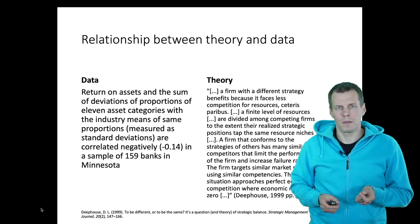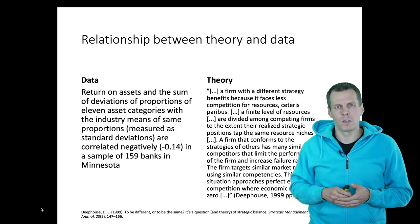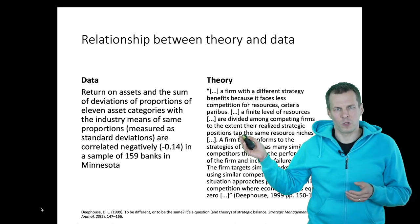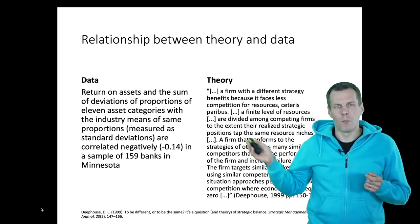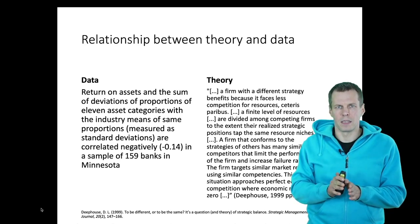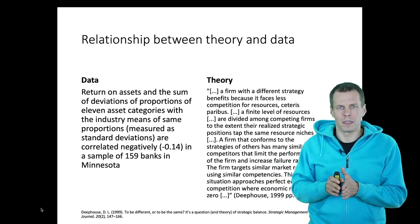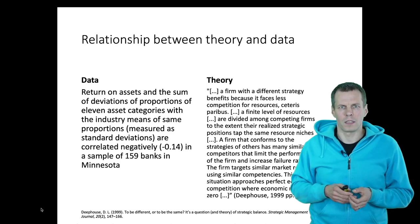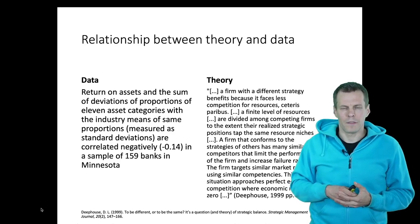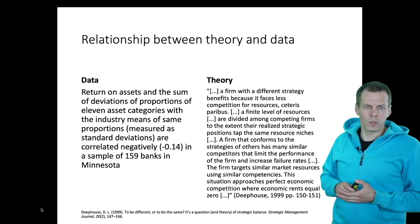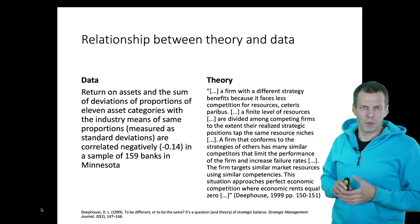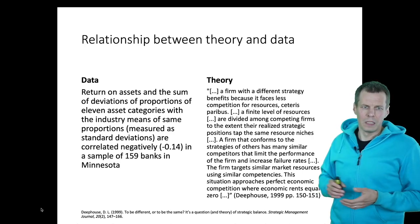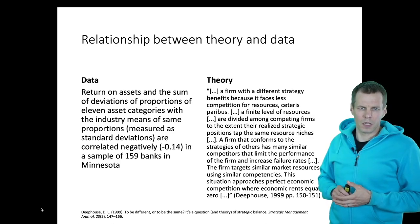Deephausen has data from banks. The data have two relevant variables: one is return on assets, a very common performance measure; another is what they call strategic deviation, which is calculated by comparing the bank's asset profile against the asset profile of a typical bank in the industry. They have 159 banks and found that the variables are negatively correlated — when one goes up, the other goes down. They also draw on LRW theory, which holds that a firm with a different strategy benefits because it faces less competition, while firms that conform to others' strategies face many similar competitors that limit performance.